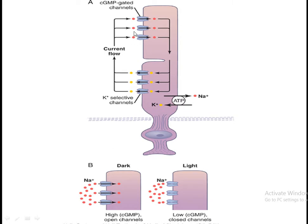In the light, the sodium channels are closed — they are not allowing sodium to come inside — so there is excessive negativity. In the darkness it balances the potassium loss, but in the light, since the channels are closed, there is excessive negativity inside the rod.